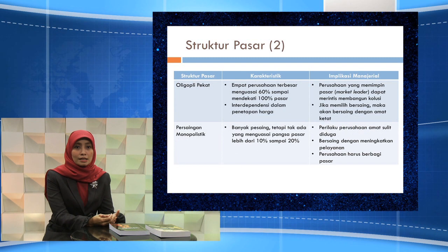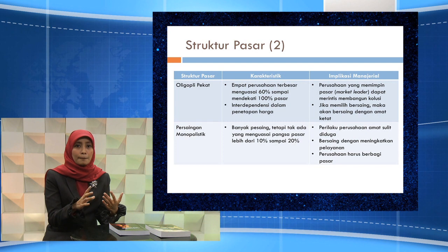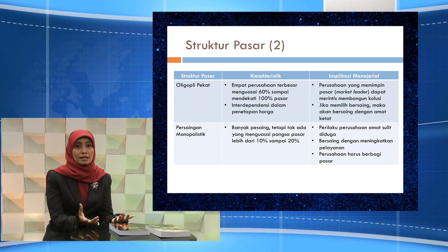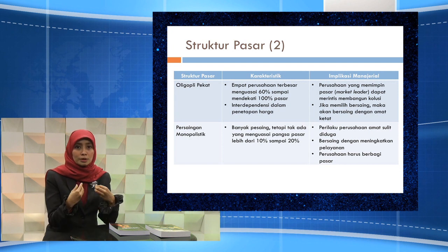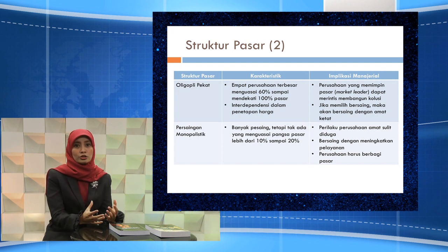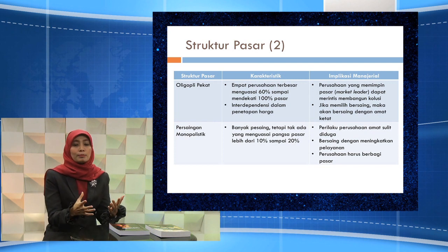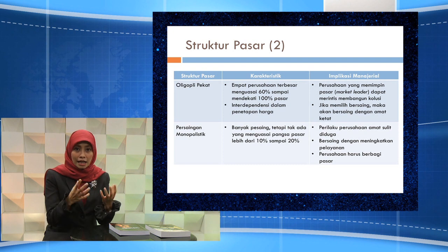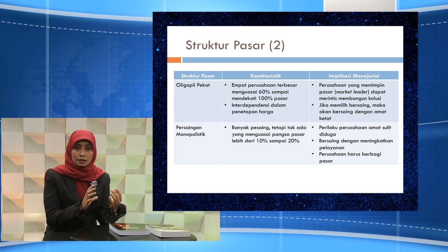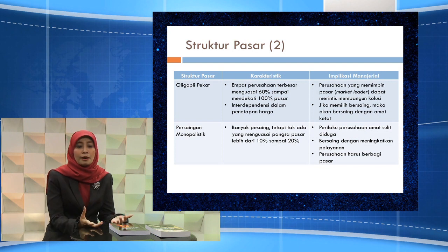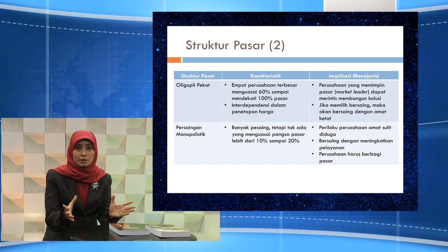Selanjutnya adalah struktur pasar oligopoli pekat. Karakteristiknya adalah terdapat hampir 4 atau 5 perusahaan besar yang menguasai 60-100% dari pangsa pasar. Biasanya interdependensi antara perusahaan satu dengan lainnya cukup tinggi dalam menetapkan harga produk atau jasa. Perusahaan yang memimpin pasar mampu merintis kolusi dengan perusahaan-perusahaan lainnya, dan apabila memilih strategi bersaing maka akan bersaing dengan ketat.